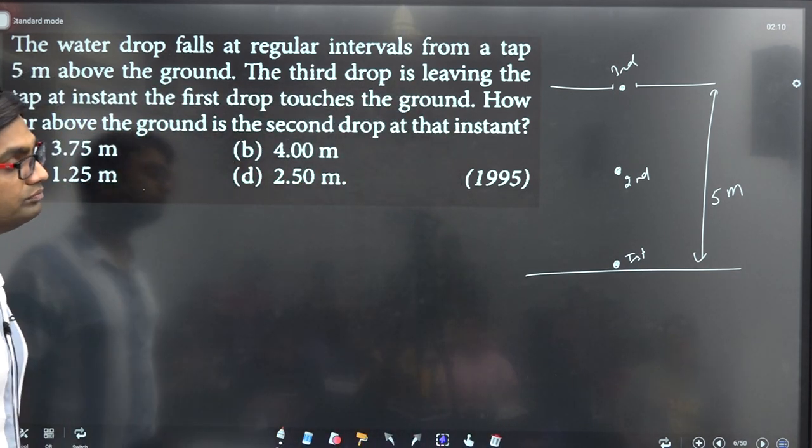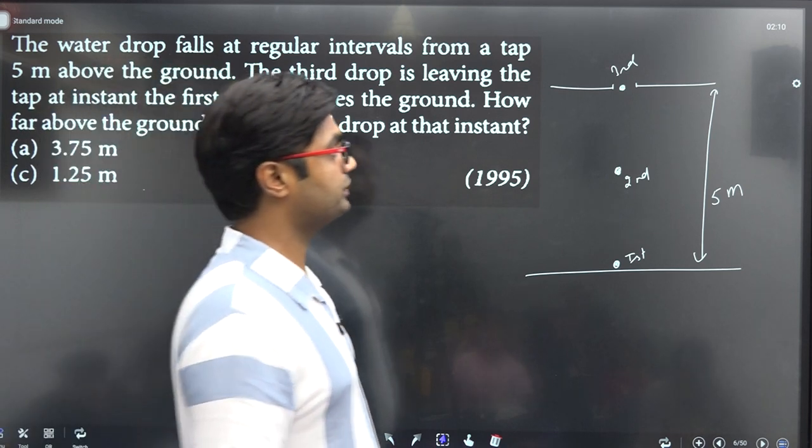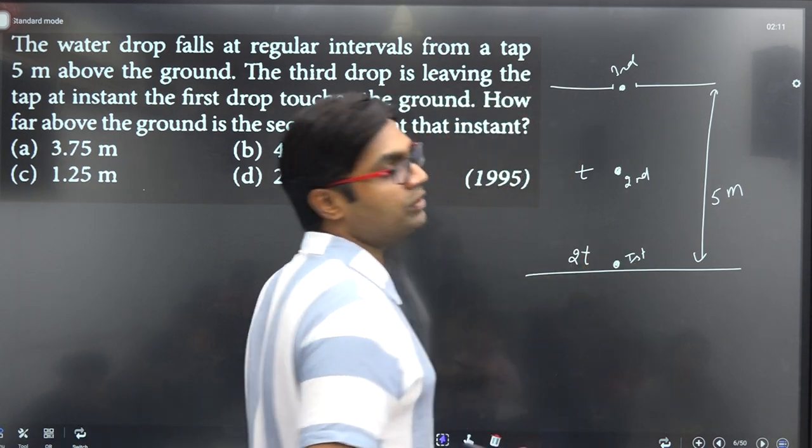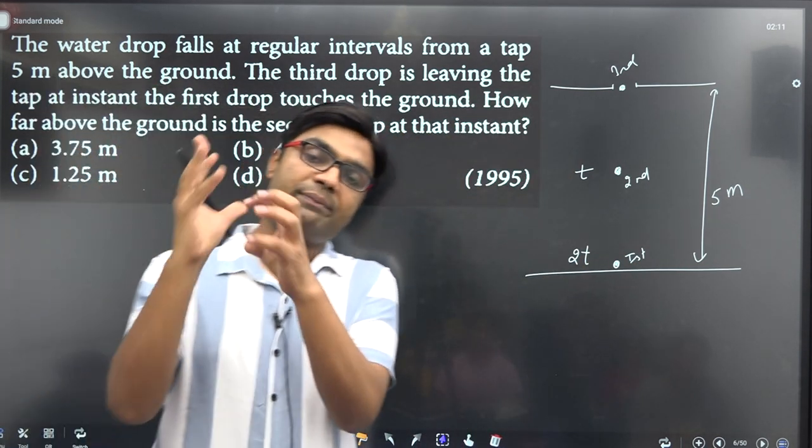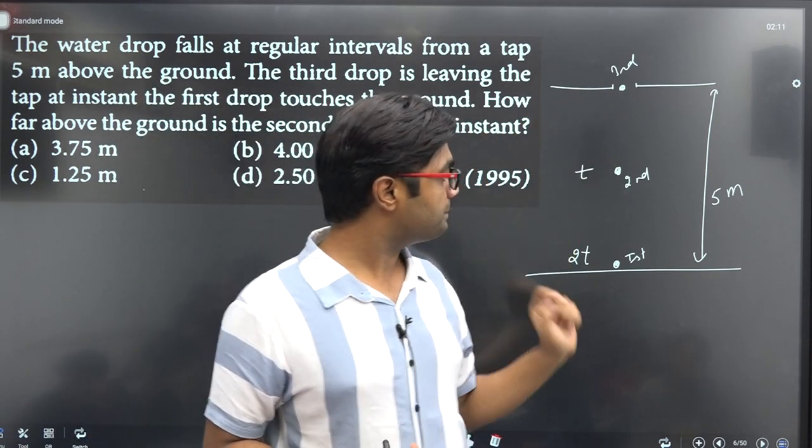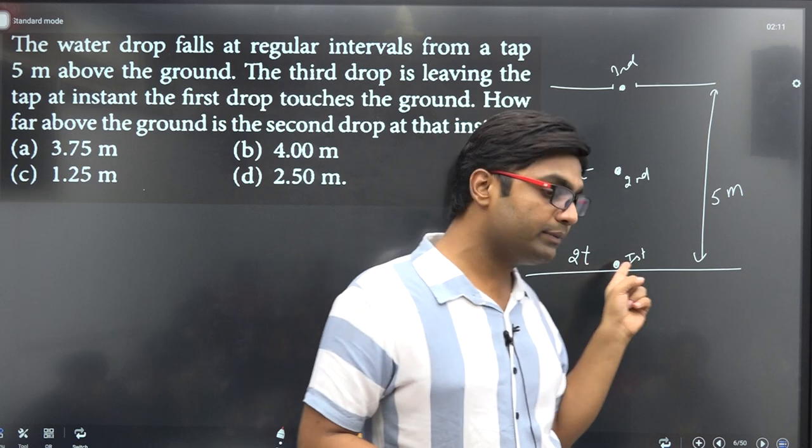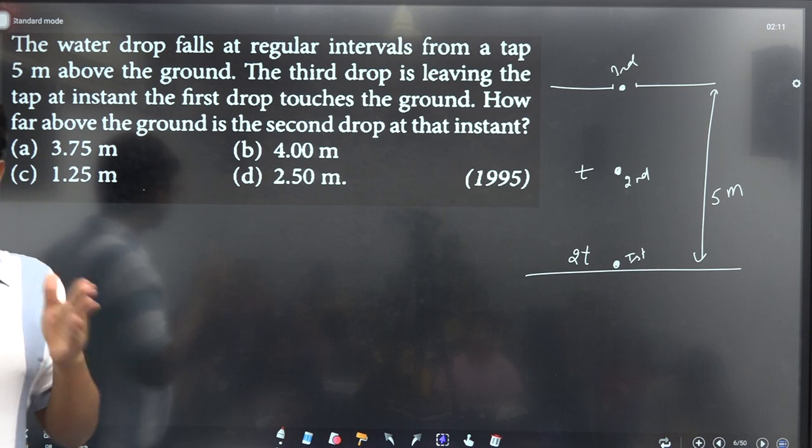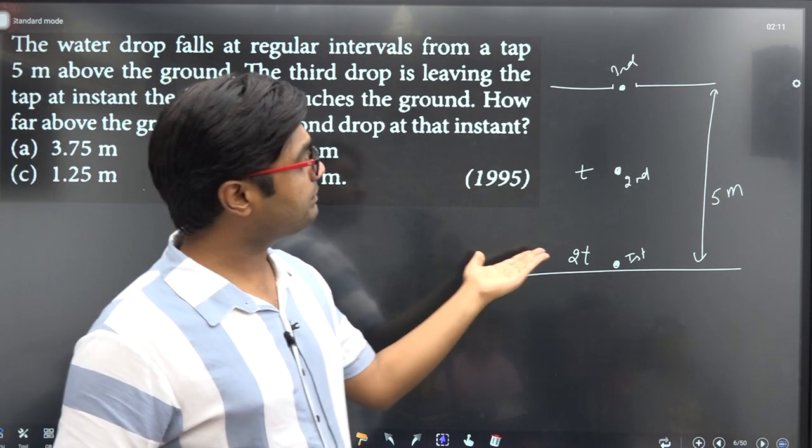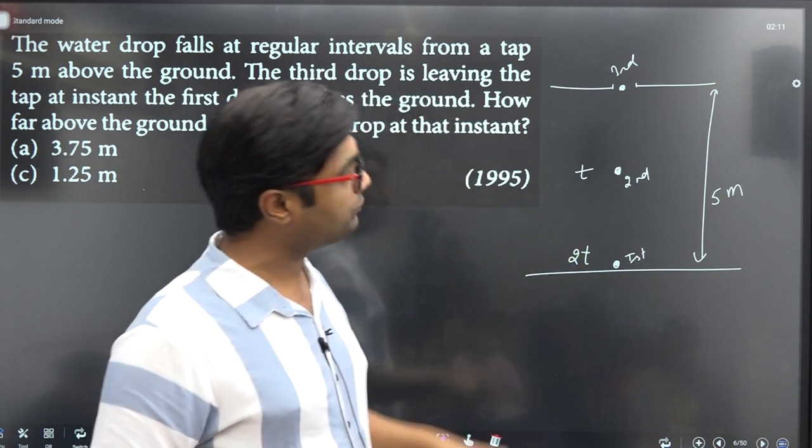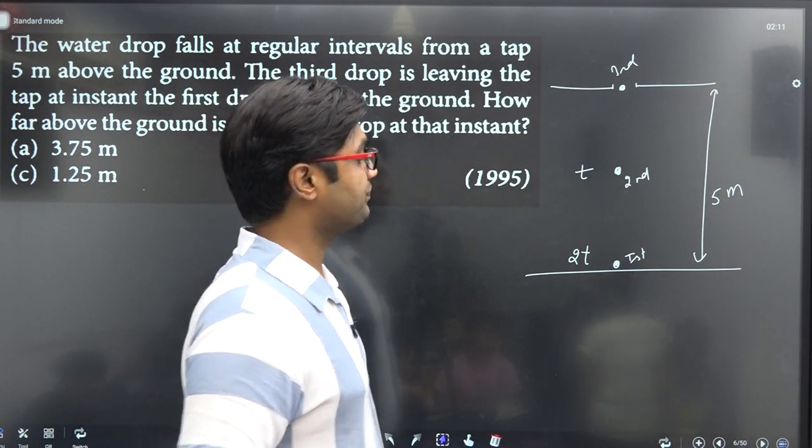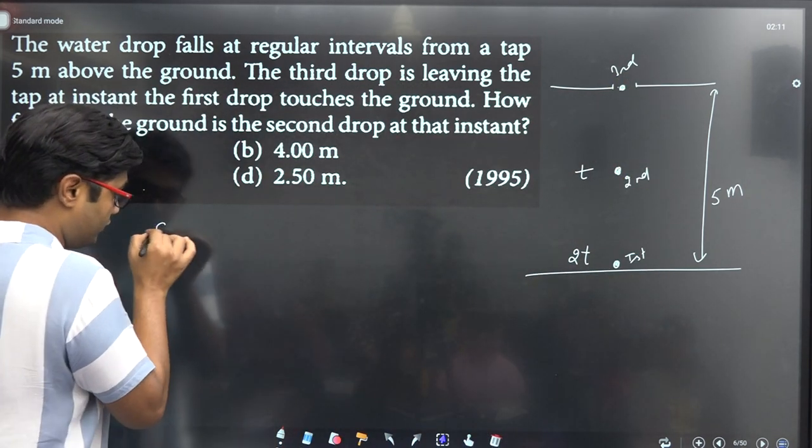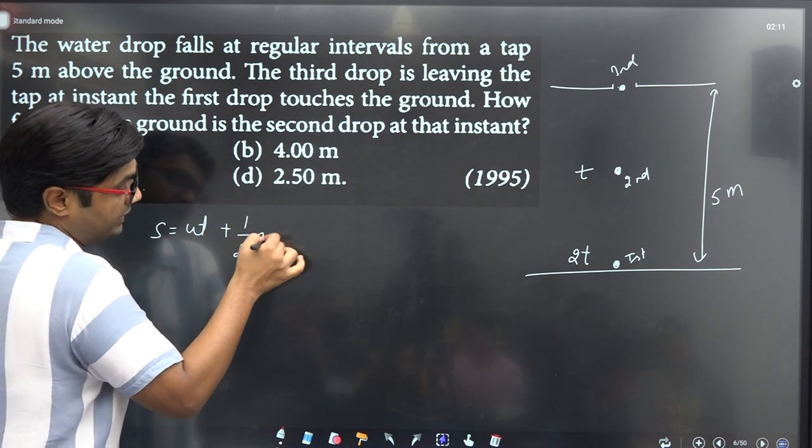Let's take the time when the first drop is released as zero time, and when it hits the ground as time T. The second drop is released at time T. Now using the equation of motion: s = ut + 1/2 at².